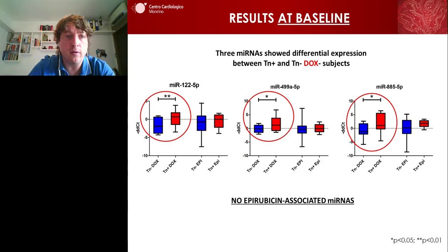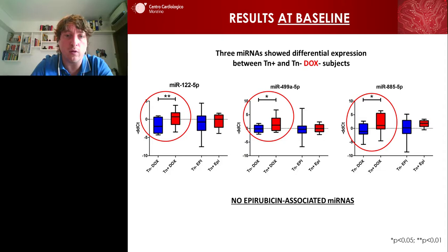The principal results at baseline were that we came up with three microRNAs which were upregulated only in patients later treated with doxorubicin: miR-1, miR-249, and miR-885B. We had results only in the doxorubicin group because, unfortunately, no epirubicin-associated microRNAs were identified.